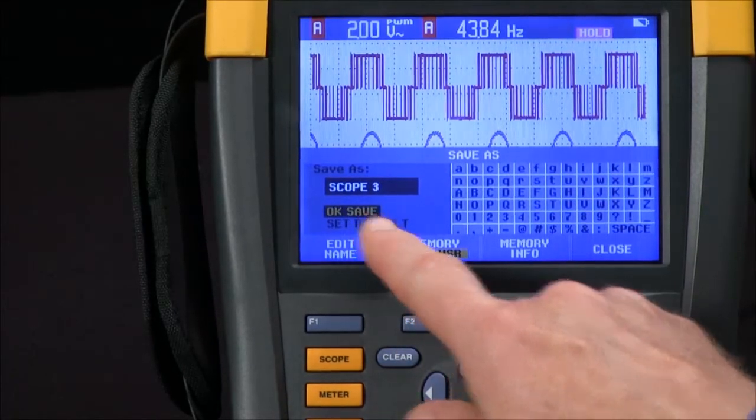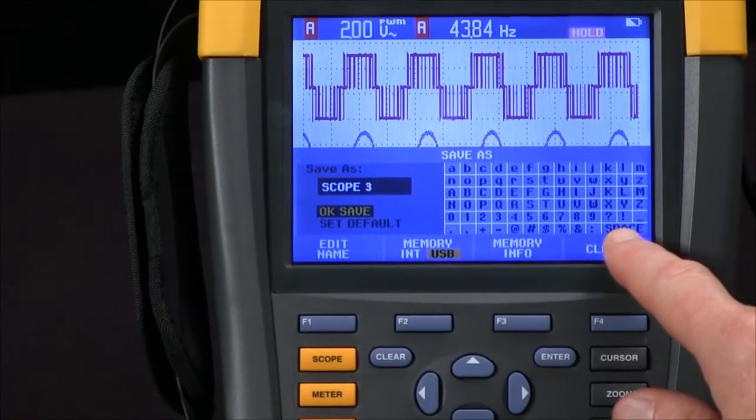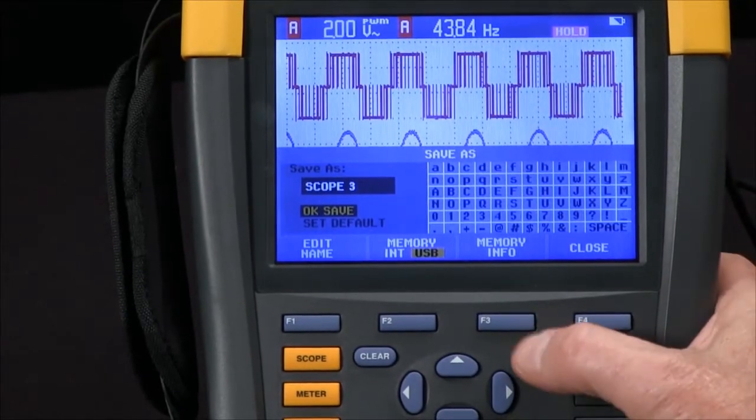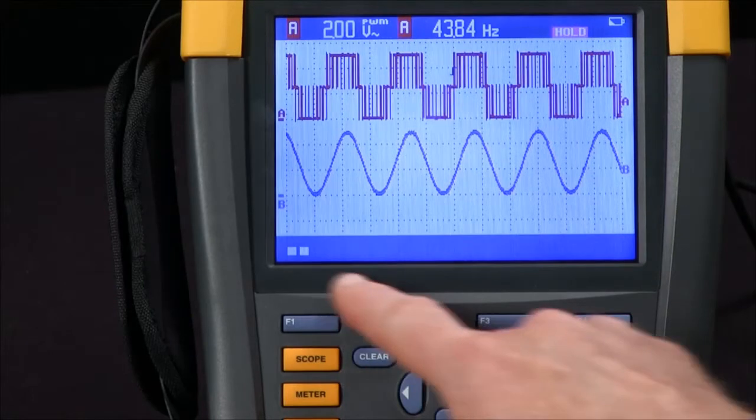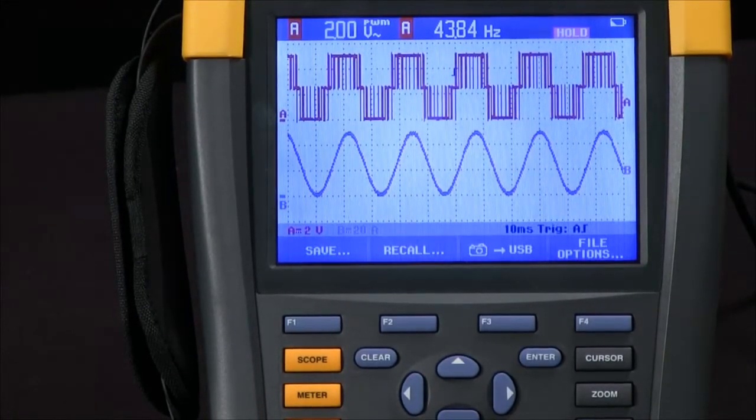We can create a name if we want to using the alphanumeric keypad over here, or just save as scope 3. I'll hit the Enter key for that. So now we're saving that data to my jump drive.